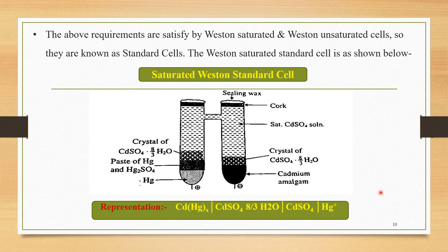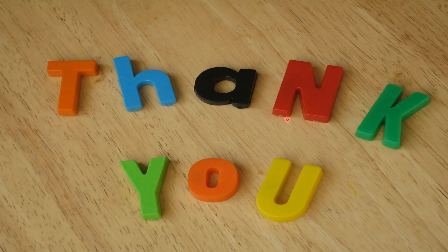In this lecture, we covered important points such as what is meant by EMF, how to measure the EMF of a cell, what is meant by the Poggendorff compensation method, how this method is useful for the determination of EMF, what is meant by standard cell, what are the requirements for a cell to be a standard cell, what are the types — saturated and unsaturated Western standard cells — and what is the difference between them. The remaining points from this chapter will be covered in our next video lectures. Thank you for watching this video.